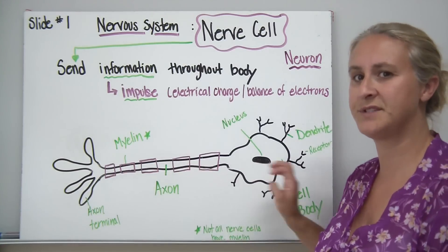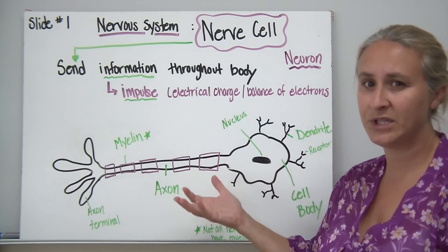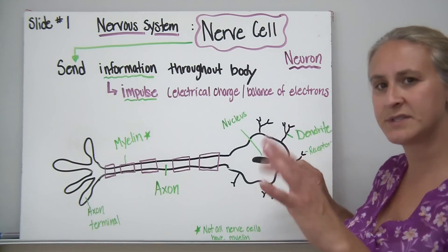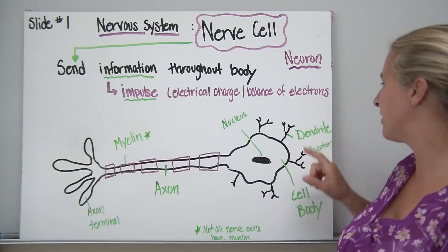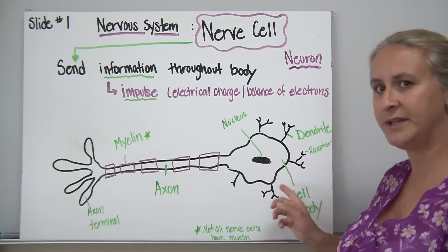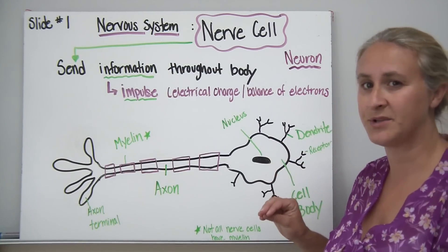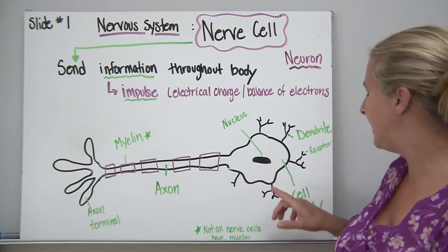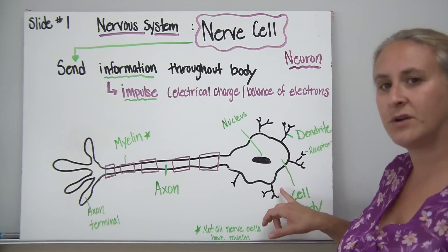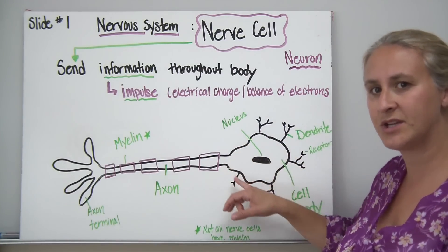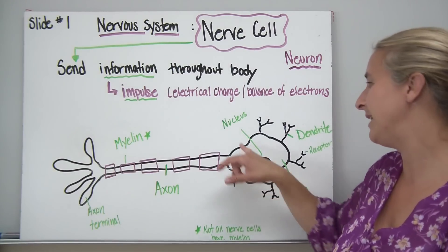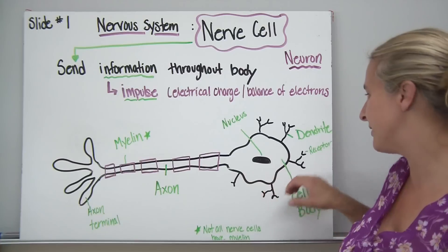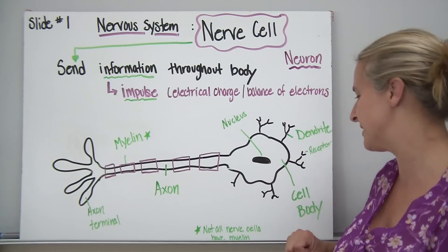A nerve cell has several different parts and can be drawn in any direction. On one end are structures that look almost like fingers, called dendrites. On the ends of the dendrites are specially shaped structures called receptors, which receive signals from a previous neuron. The central region is the cell body, which contains a nucleus just like a normal cell, with all these dendrites at its end.